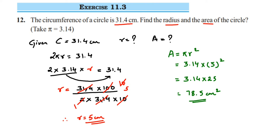So we found the radius and the area using the circumference of the circle. I hope this question is clear. In case you have a further question or doubt, you can drop a comment below. Thank you so much for watching.